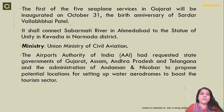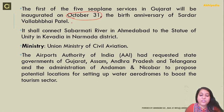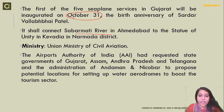The first of five seaplane services in Gujarat will be inaugurated on the 31st of October, which is the birth anniversary of Sardar Vallabhbhai Patel. It will connect the route from Sabarmati River in Ahmedabad to the Statue of Unity in Kevadia in Narmada district.